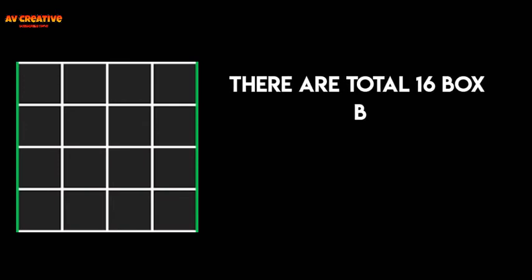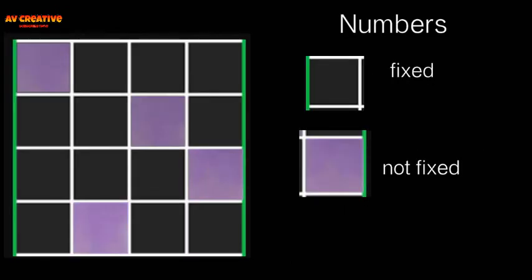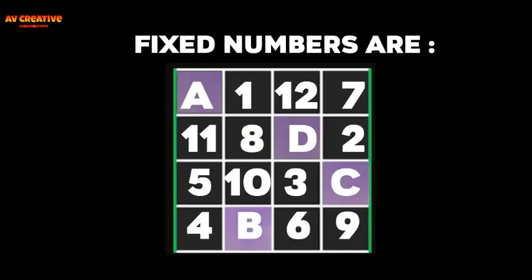Isn't it interesting? Let's see how it actually works. There are total 16 boxes but you have to only care about 4 blocks because 12 numbers are fixed in their positions. The fixed numbers are 1, 12, 7, 11, 8...